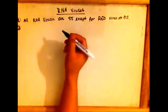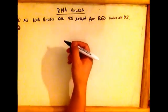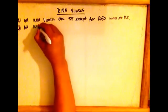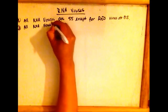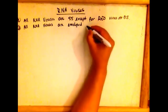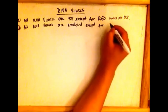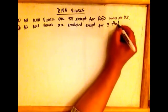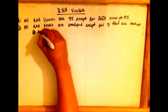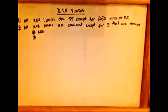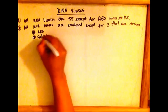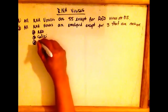Fact number two: RNA viruses are enveloped except for three that are naked. Those three naked RNA viruses are the reovirus, which is also the double-stranded RNA virus, the calicivirus, and the picornavirus.